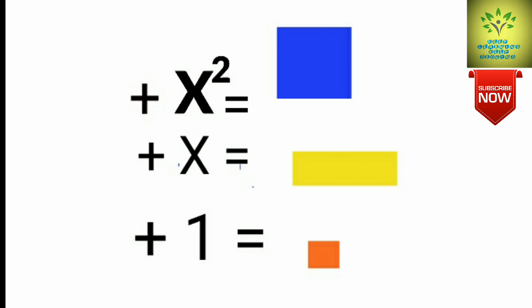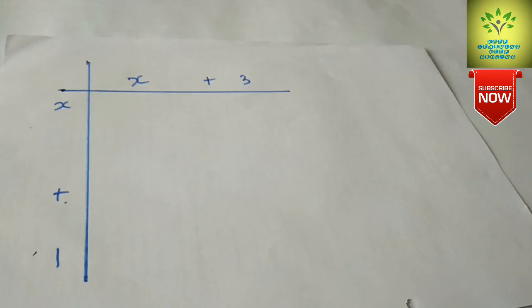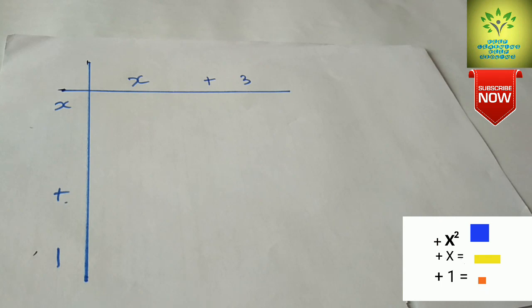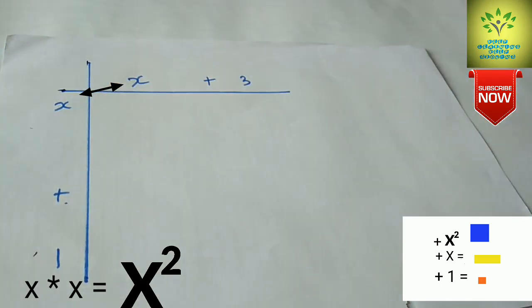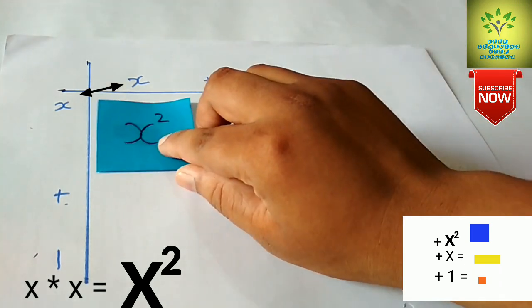For the activity: x squared is equal to a blue square cut of paper, x is equal to a rectangular yellow paper, and 1 is equal to an orange piece of paper. Now let us begin our activity. x times x equals x squared, so the blue paper shows x squared — we will put it in its place.